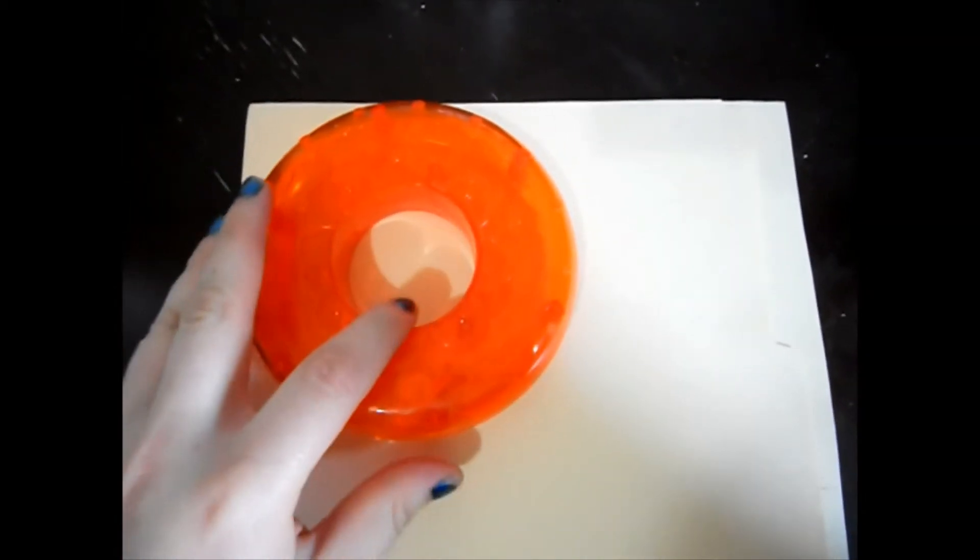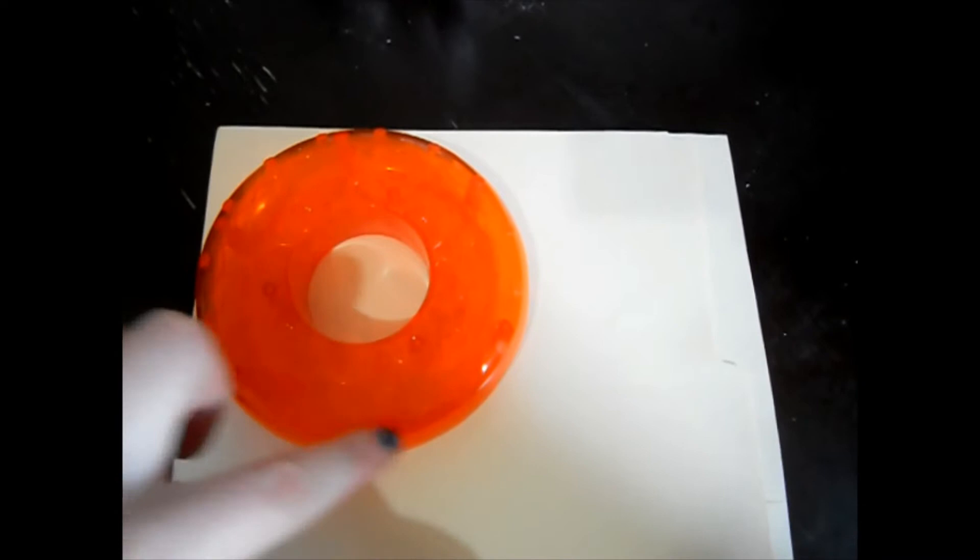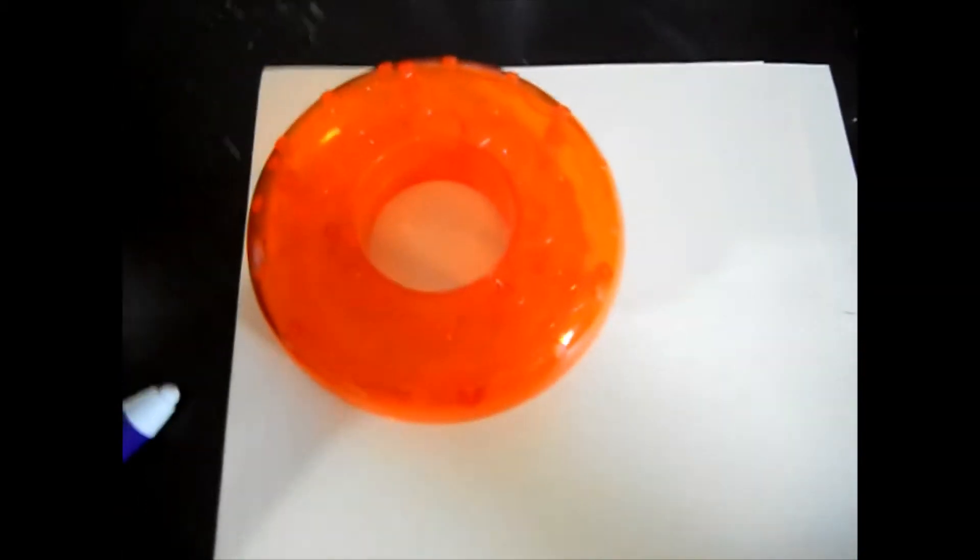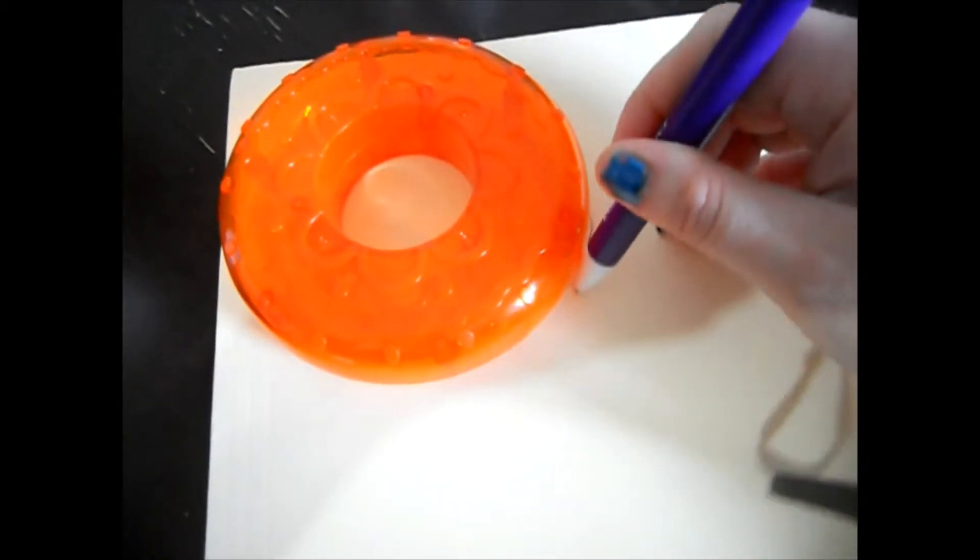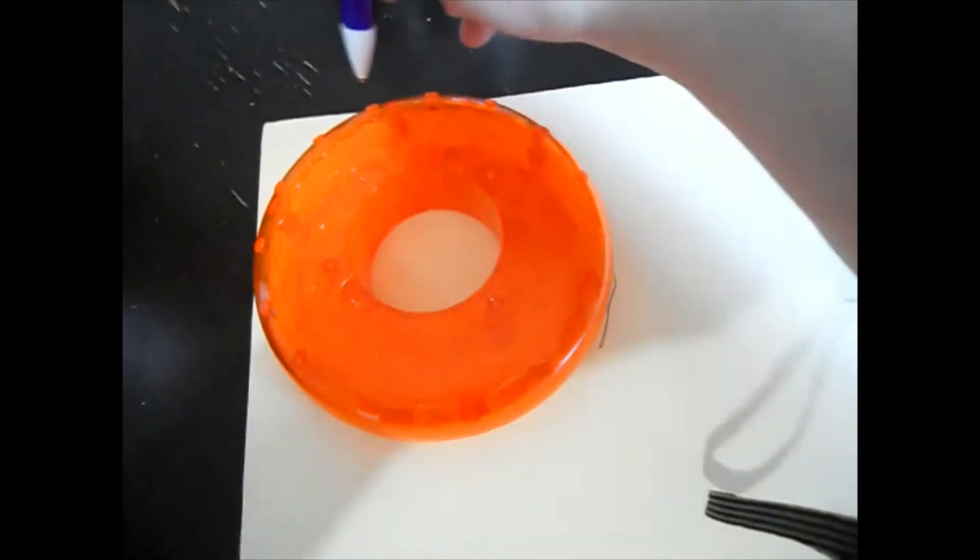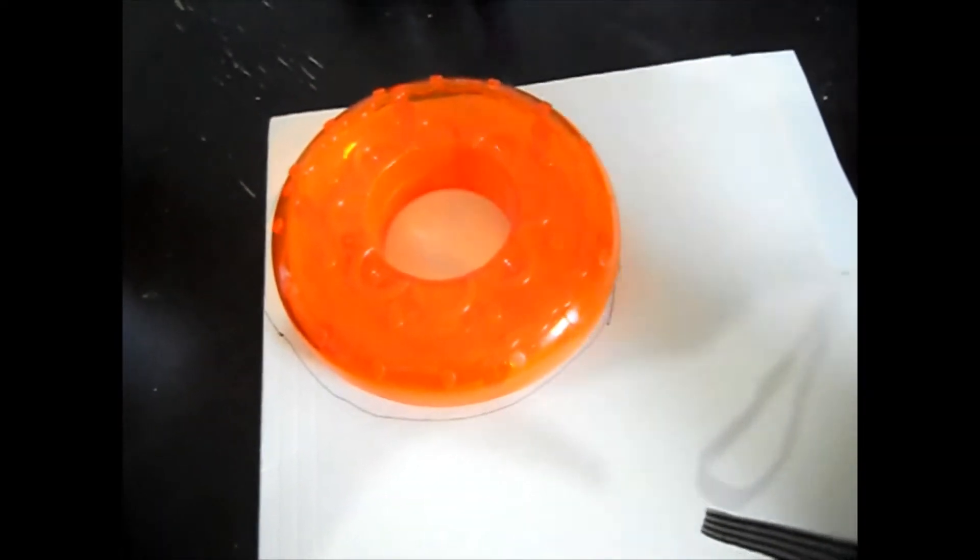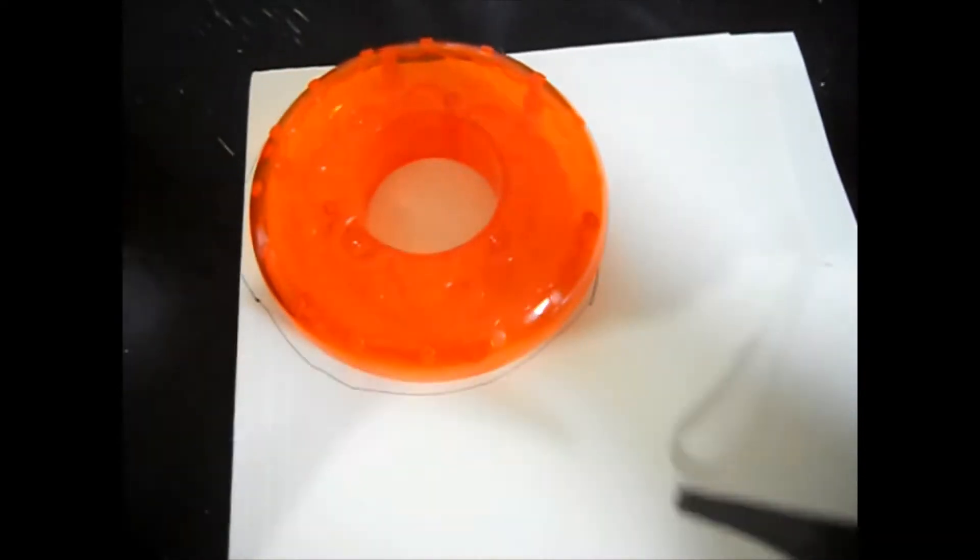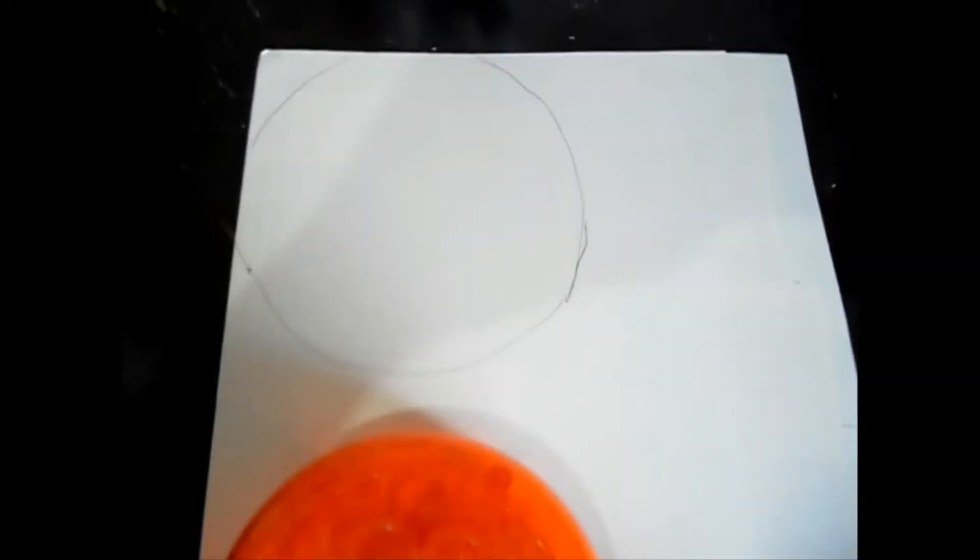So the first step is to trace. I'm going to trace this circle just on the outside, and I'm going to show you. Bear with me, and it does not have to be perfect. And you want to do that too because you need one from the front and one from the back. If you're having your child do it, like I said, it does not have to be perfect.